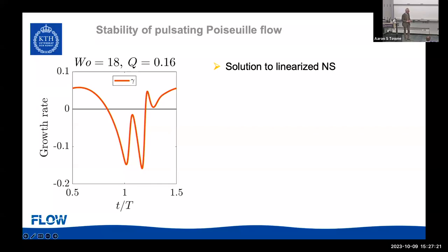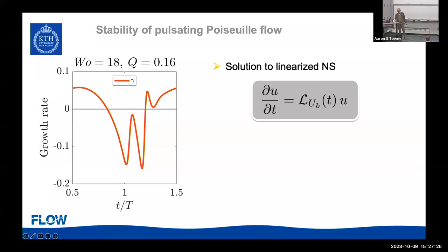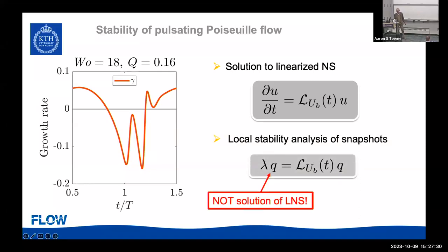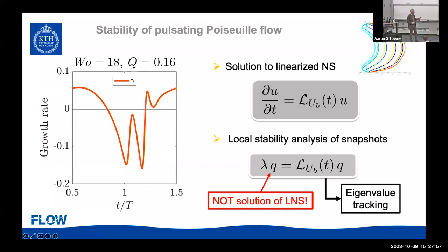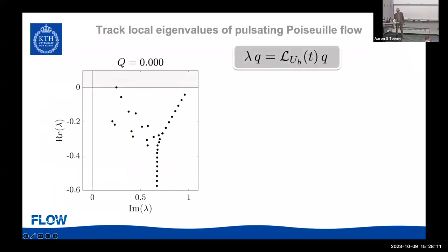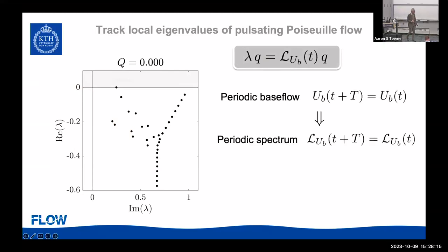We compare this to the local stability analysis of the snapshots. Of course, the local stability analysis of the snapshots is not a solution to the Navier-Stokes because it assumes no time dependence. Instead, we track the eigenvalues — what happens to the eigenvalues as we change this oscillating pulsatile flow. If we have a periodic base flow, the spectrum will also repeat itself after a period, because it goes back to exactly the same problem.